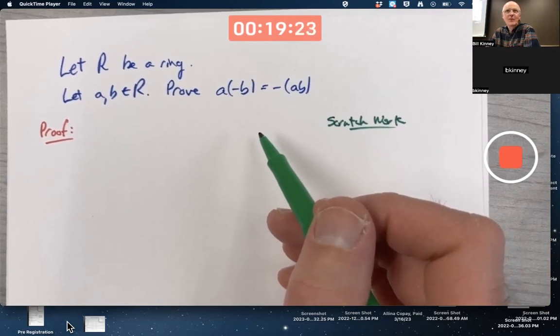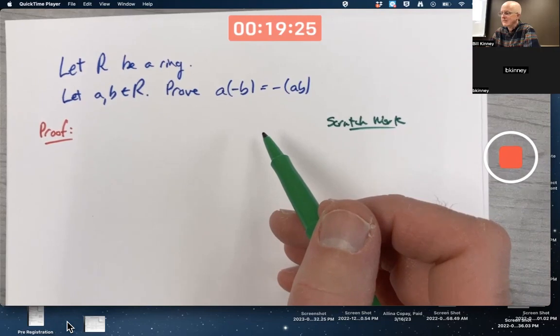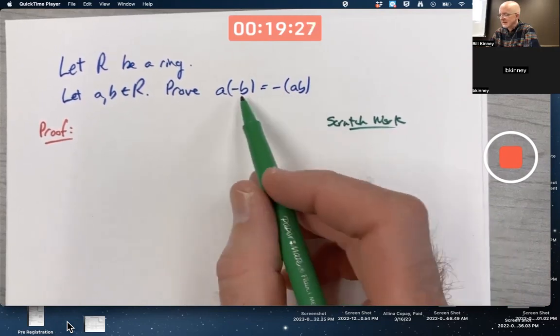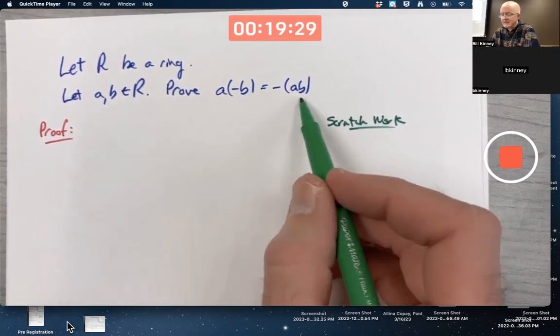So does that even make sense? It's better, and it emphasizes the meaning more if you say that's the additive inverse of B and this is the additive inverse of AB.